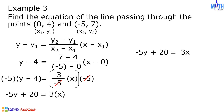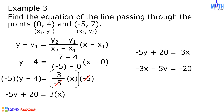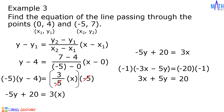Next, let us use the addition property of equality: let us transpose 3x on the left side and transpose 20 on the right side. And we have negative 3x minus 5y equals negative 20. To make the leading coefficient positive, let us multiply both sides of the equation by negative 1. Negative 1 multiplied by negative 3x minus 5y equals 3x plus 5y equals negative 20 times negative 1 is equal to positive 20.